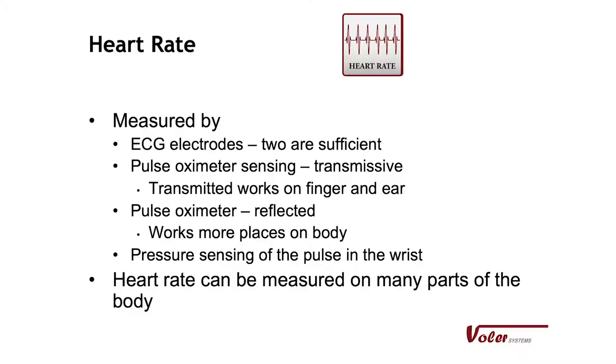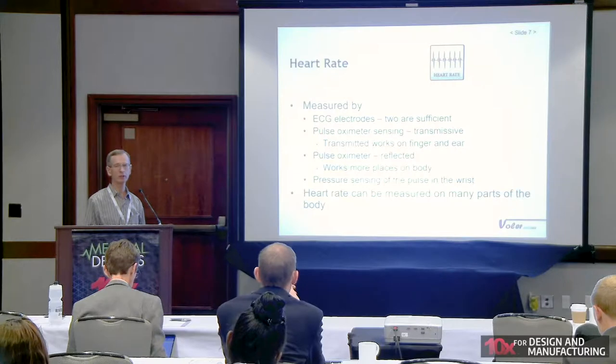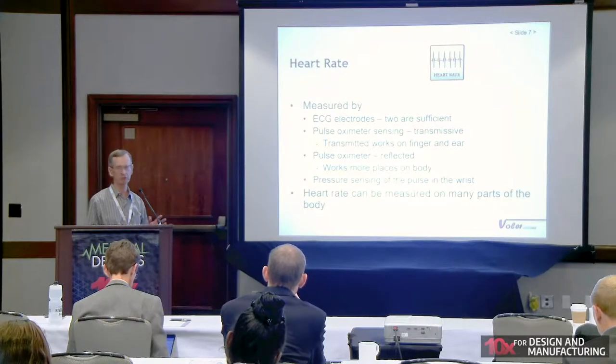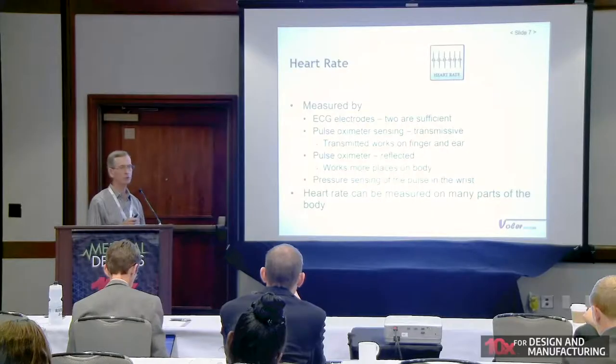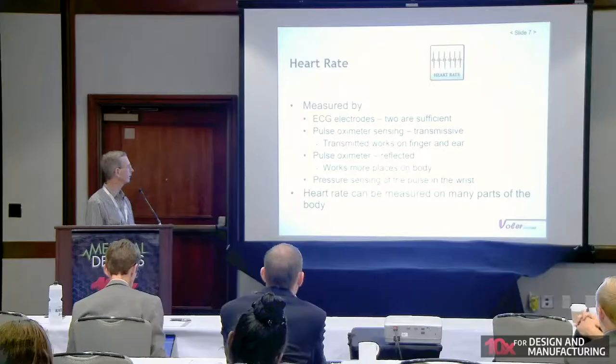Heart rate is a very important measurement. You can measure it with ECG electrodes — you don't need a complete ECG, just two electrodes, even on the wrist. What people really want is a dry electrode, and dry electrodes need to make good contact. Another way is with pulse oximeter technology — PPG. The pulse oximeter is used for measuring oxygen, but the main thing it actually measures is the pulse; they remove the pulse in order to see the oxygen.